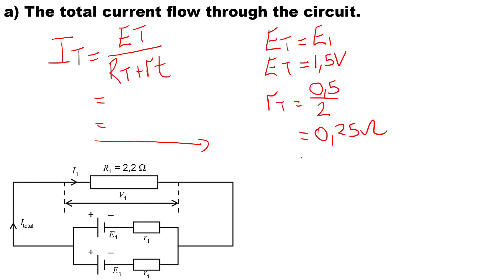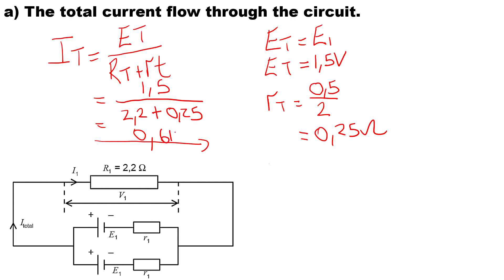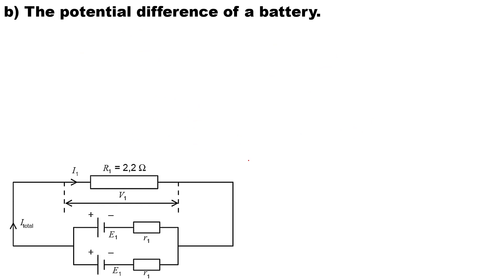Substituting the values: EMF total is 1.5 volts, external resistance is 2.2 ohms, and internal resistance is 0.25 ohms. Therefore, the total current for this circuit is 0.612 amps.